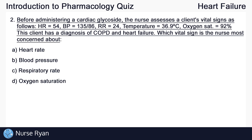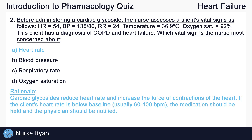Before administering a cardiac glycoside, the nurse assesses a client's vital signs as follows: heart rate is 54, blood pressure is 135 over 86, respiration rate is 24, temperature is 36.9, and O2 sat is 92%. This client has a diagnosis of COPD and heart failure. Which vital sign is the nurse most concerned about? The answer here is A, heart rate. Cardiac glycosides reduce heart rate and increase the force of contractions of the heart. If the client's heart rate is below baseline — which is usually about 60 to 100 beats per minute — the medication should be held and the physician should be notified.